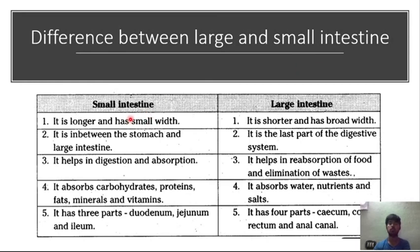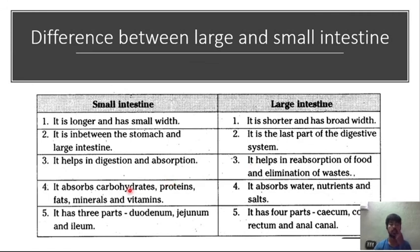The small intestine is longer but smaller in width, whereas the large intestine is shorter but broader. The small intestine mainly helps in digestion and absorption of carbohydrates, proteins, fats, minerals, and vitamins. The large intestine is mainly involved in reabsorption of water, nutrients, and salts, and elimination of waste. The small intestine has three parts (duodenum, jejunum, ileum) while the large intestine has cecum, colon, rectum, and anal canal.